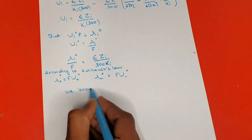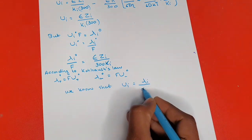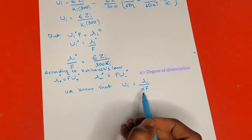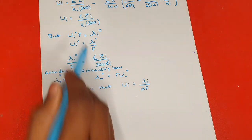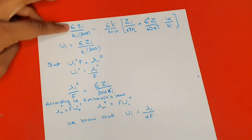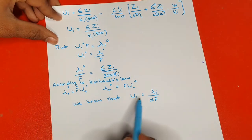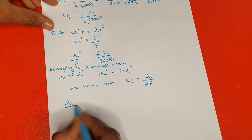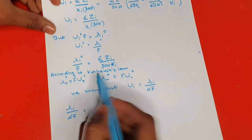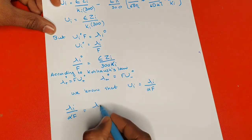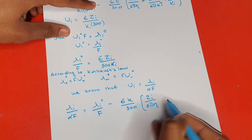For the electrolyte, u_i = λ_i / (α·f). If the electrolyte is completely dissociated, α = 1. Substituting back into the starting equation: in place of u_i write λ_i/(α·f), and in place of e·z_i/(300·k_i) write λ_i⁰/f. The remaining terms are −e·k/300 · [z_i/(6πη) + e²·z_i/(6D·kT·ω·k_i)].